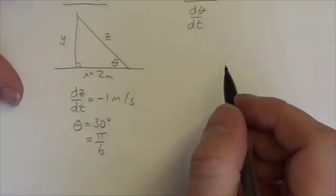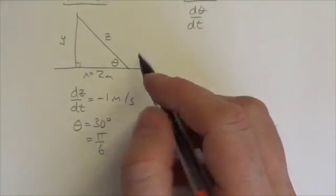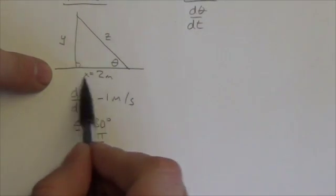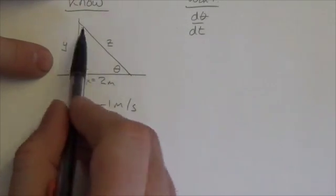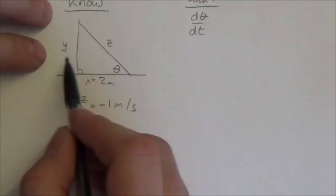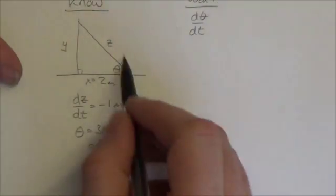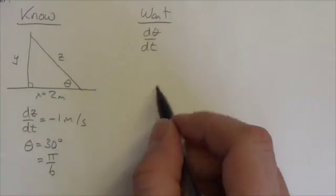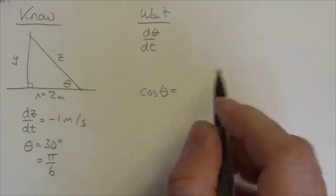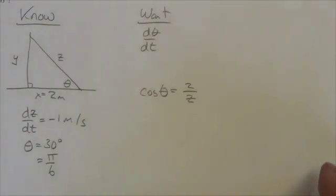So let's think about here what trig ratio is going to relate those two. I've got this angle here changing. I know that my base here is a constant and I know that the length of the ladder here is changing in time. So I really haven't asked anything about how far up the wall it reaches, so I'm not concerned about that. The trig ratio that's going to relate those three will be cosine. The cosine of θ is going to equal that 2 over z. Let's zoom in on this.